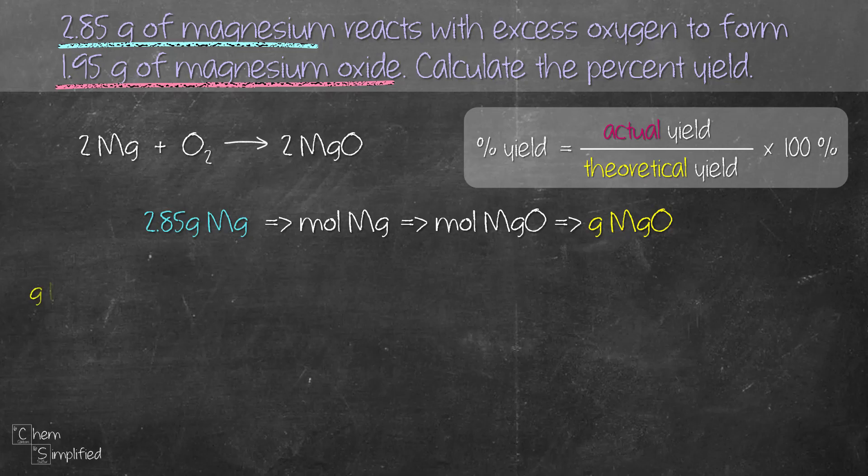We are finding the grams of MgO and we start with 2.85 grams of Mg. The first step is to convert from grams of Mg to moles of Mg. Conversion from grams to moles requires the atomic mass of magnesium. We place grams of Mg at the bottom so they cancel out, and moles of Mg on top.